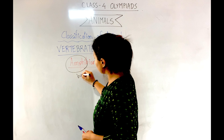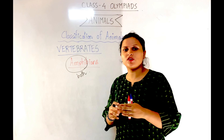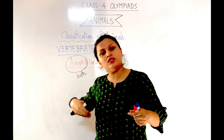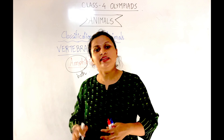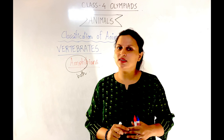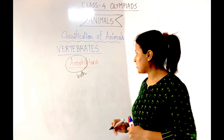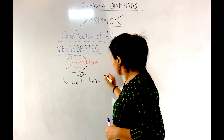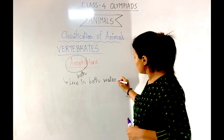The prefix 'amphi' means both. Amphibians are called so because they are able to live on both land and water. It's not just that they can go in water — they must complete a part of their life cycle in water, and then come out. That is why they are called amphibians.